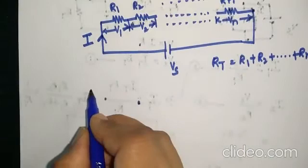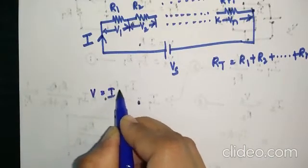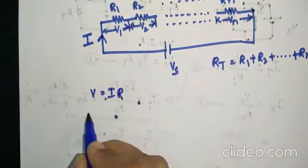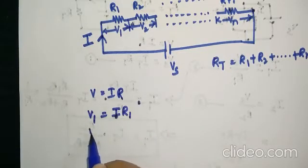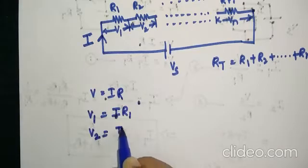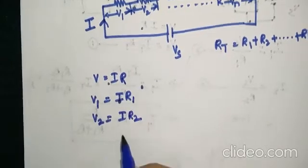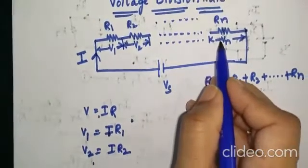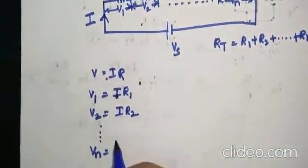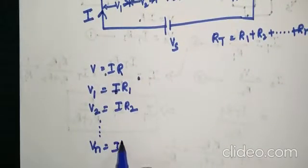According to Ohm's law, V equals I times R. So let us find V1. V1 equals I into R1. V2 equals I into R2, and so on. Vn, the voltage across the nth element, equals I into Rn.